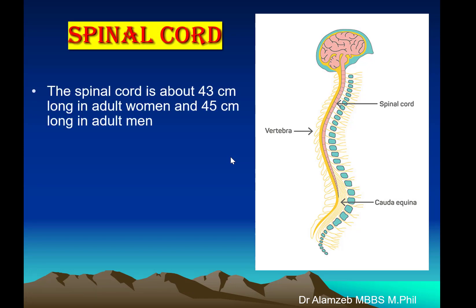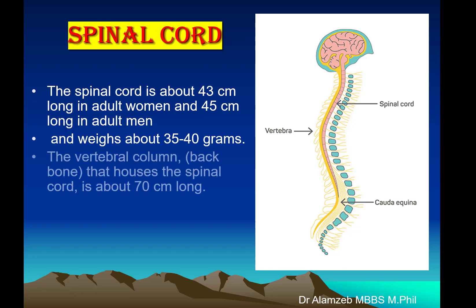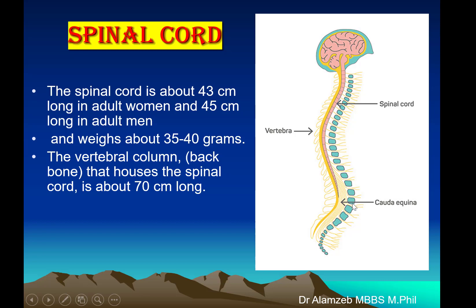The spinal cord is about 43 cm long in adult women and 45 cm long in adult men, and its weight is 35 to 40 grams. The vertebral column, also called the backbone, which houses the spinal cord, is about 70 cm long. So the spinal cord is shorter than the vertebral column, and when it ends, the spinal cord's terminal end is called the cauda equina.